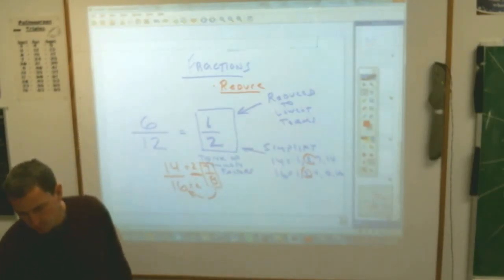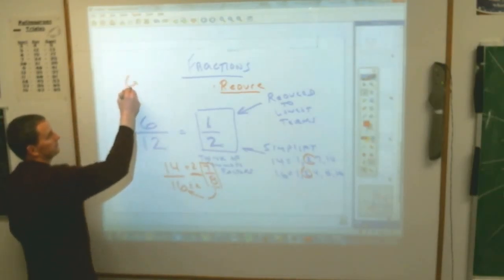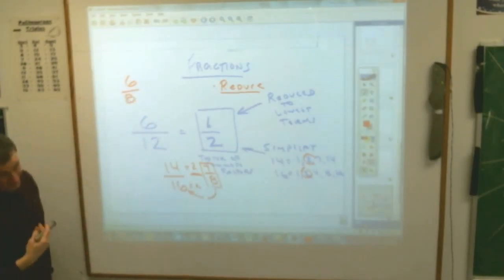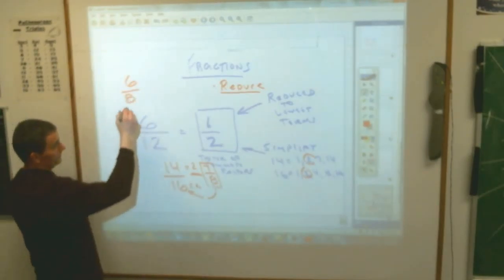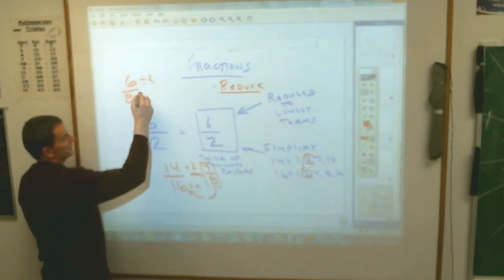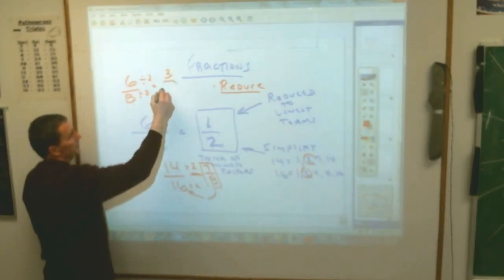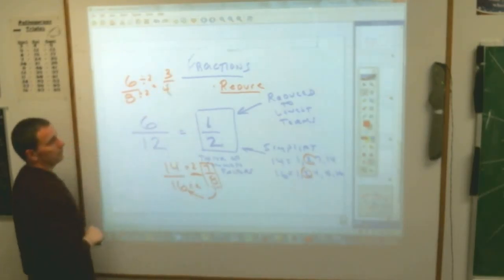Another example would be 6 eighths. We'll give you easy ones to start off with. What number goes into both 6 and 8? That's pretty easy because they're both even, Bryce. 2. And I want to see this when you do this right now. You're dividing by things. 6 divided by 2 is 3. 8 divided by 2 is 4.